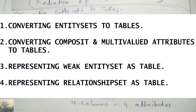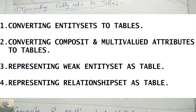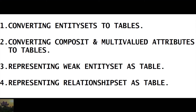The reduction of the ER schema will be of four types as shown on the screen: converting entity sets to tables, converting composite and multi-valued attributes to tables, representation of weak entity sets as tables, and representation of relationship sets as tables.